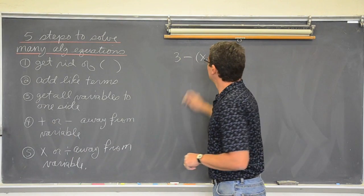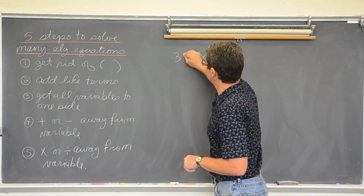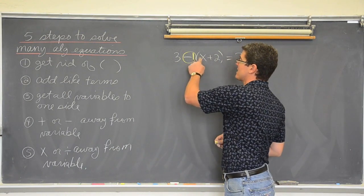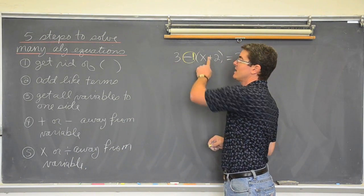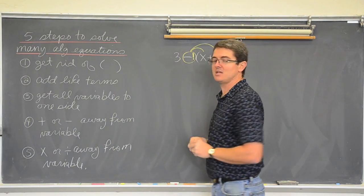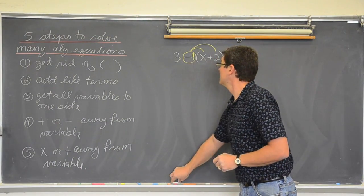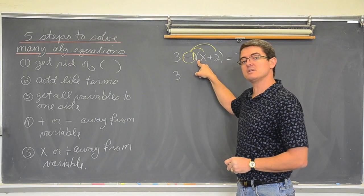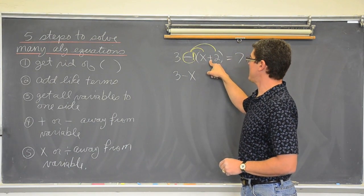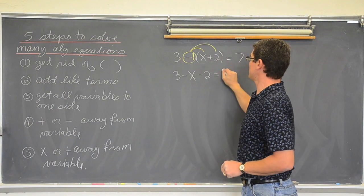Well, there is a negative 1 there that does not have to be represented. We can just have the minus sign. But, there really is like a multiplication of negative 1. That negative 1 is what is going through the parenthesis giving you this. 3, negative 1 times 1 is negative 1x. Negative 1 times positive 2 is negative 2 equals 7.